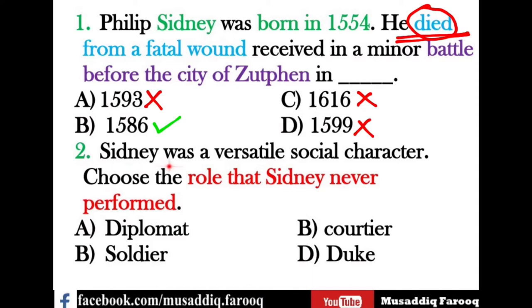Question two: Sidney was a versatile social character. You have to choose the role that Sidney never performed. He was certainly a diplomat, a courtier, and a soldier. However, he was never a Duke. So the correct answer is Duke — Sir Philip Sidney definitely remained a diplomat, soldier, and courtier, but he never became a Duke.